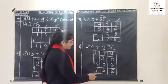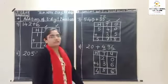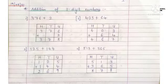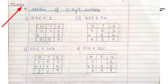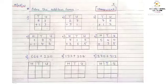So the answer is four hundred and fifty-six. Students, I hope you all have understood how to solve three-digit addition sums. Now, students, remove your Math CW book, put today's date and start writing the sums from the given images. Solve Math's homework in your Math CW book. Thank you.